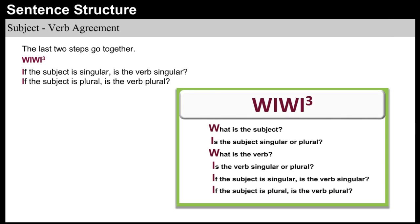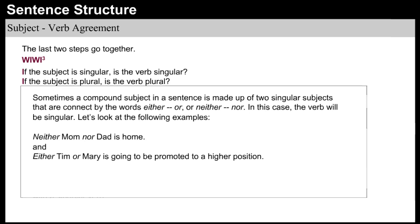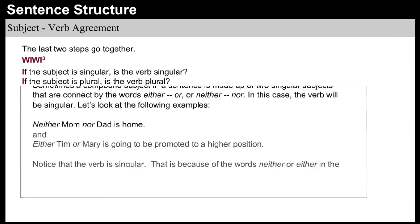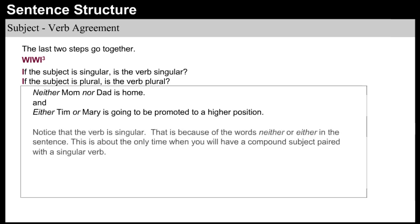The last two steps go together: If the subject is singular, is the verb singular? And if the subject is plural, is the verb plural? These steps ask us to examine the sentence for subject-verb agreement. Sometimes a compound subject is made up of two singular subjects connected by either/or or neither/nor. In this case, the verb will be singular. For example: 'Neither mom nor dad is home,' and 'Either Tim or Mary is going to be promoted to a higher position.' This is about the only time when you will have a compound subject paired with a singular verb.